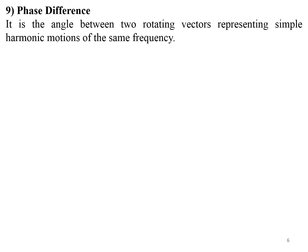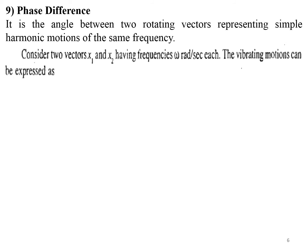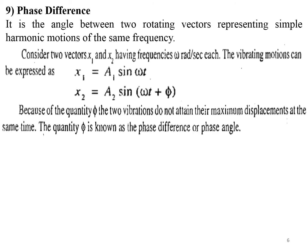Phase difference is the angle between two rotating vectors representing simple harmonic motions of the same frequency. For example, taking two vectors x1 and x2 with frequency omega radians per second, the vibrating motions can be expressed as x1 = A1 sin(ωt) and x2 = A2 sin(ωt + φ). Because of the quantity φ, the two vibrations do not attain their maximum displacement at the same time. The quantity φ is known as the phase difference or phase angle.